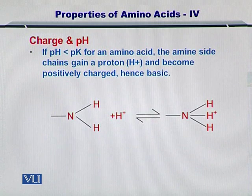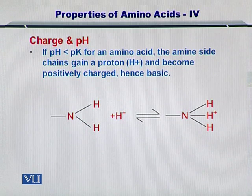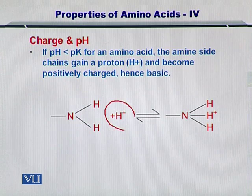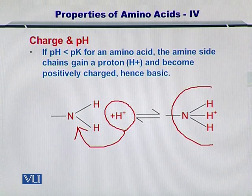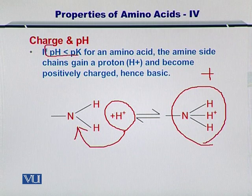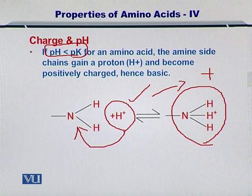This is a very important concept because it helps you determine the charge on an amino acid at any given pH. If the pH is less than the pK value for an amino acid, the amine side chain gains a proton and becomes positively charged — hence basic. As shown in the figure, if a proton is added onto the amino group, the overall charge is positive. Only when pH is less than pK will enough protons be available to give rise to a positively charged amino group.